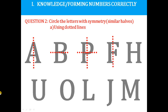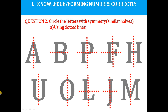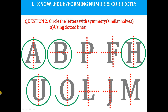All letters are now divided. All letters are divided into two similar halves, but we need to identify which letters can truly be divided into two similar halves. We have to circle those letters. Yes — A, B, H, U, O, M — these can be divided into two similar halves.